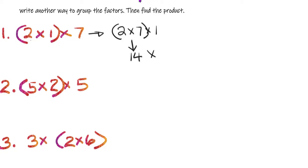Two times seven is 14. You multiply that by the other factor that's left, which is one. Fourteen times one is 14. Any number times one is that same number. So I did write another way to group the factors. And then I found the product.